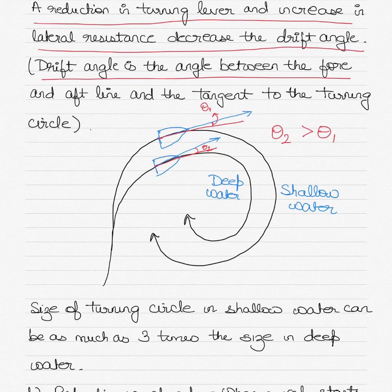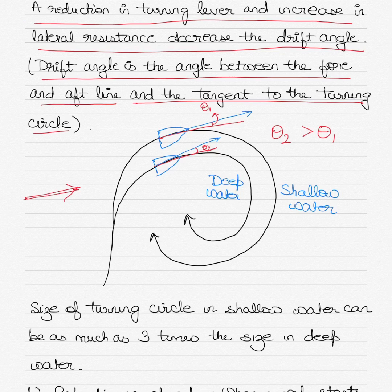Drift angle is the angle between the fore and aft line of the vessel and the tangent to the turning circle. If you can see in this diagram here, the bigger circle is the turning circle of the vessel in shallow water where the drift angle is theta 1.